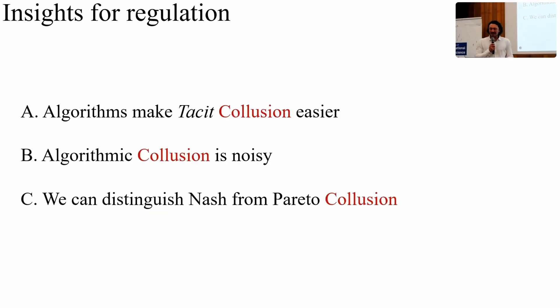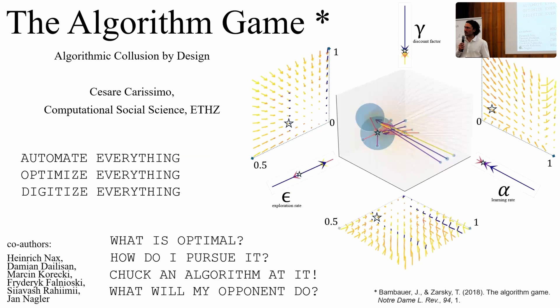So those are our insights for potential regulation. Algorithms make tacit collusion easier. In fact, it seems quite ubiquitous. But the kind of tacit collusion that we will find is very noisy. It's not obvious to see. But we can distinguish it from rational. So we can distinguish the rational kind of collusion from a communicative type of collusion. Thank you very much.